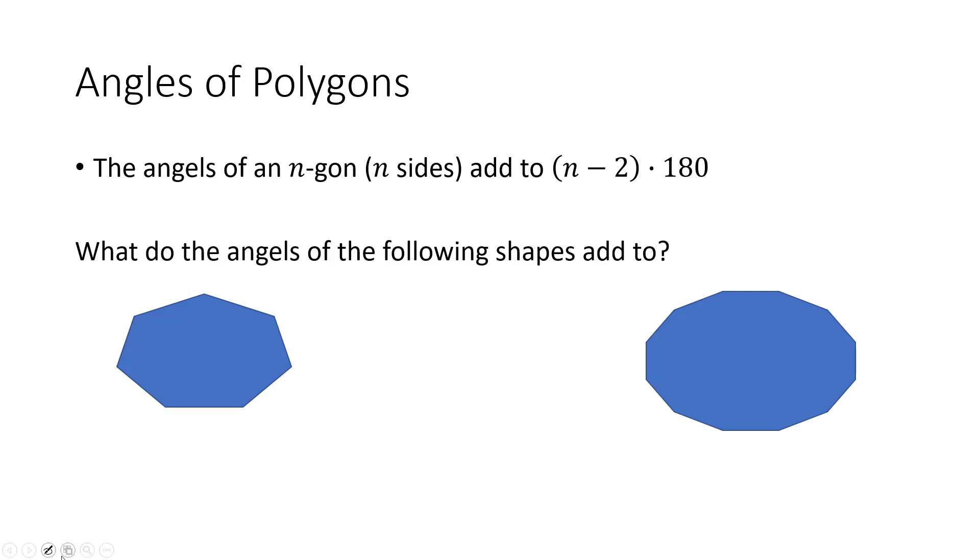So we've got two shapes here and we want to know what do the angles add up to on these two shapes? Well, how many sides do we have? 1, 2, 3, 4, 5, 6, 7 sides. So n is equal to 7 here. We just go to the formula, 7 minus 2 times 180, or 5 times 180, which I'll probably need a calculator for. But 5 times 180 is 900.